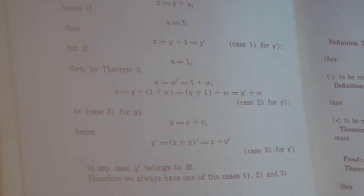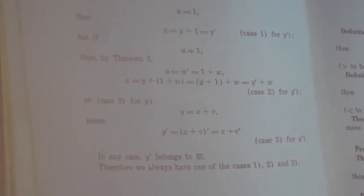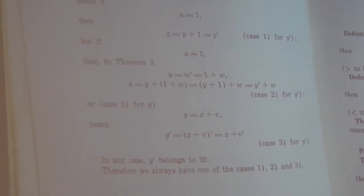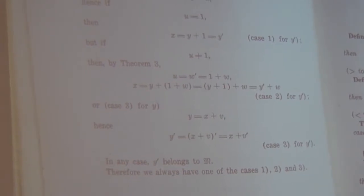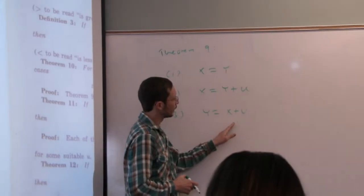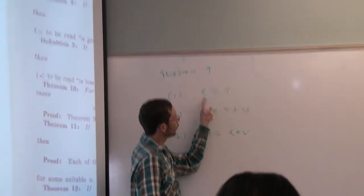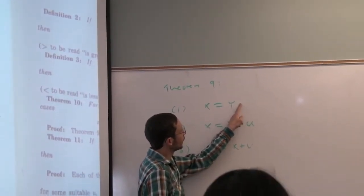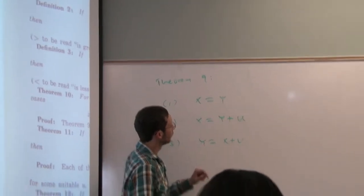We're doing this by induction. We've shown so far that if you have Case 1, which was x equals y, then when you take y's successor, you land in another one of those three cases. Specifically, you land in Case 3. If you started in Case 1 and take y's successor, then x is equal to y plus 1.